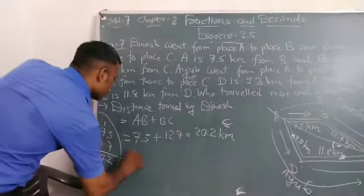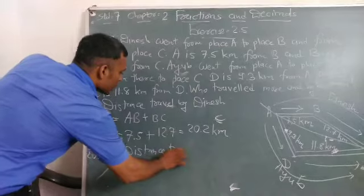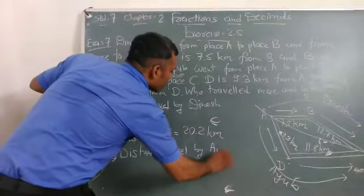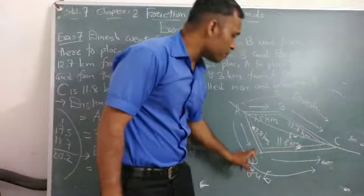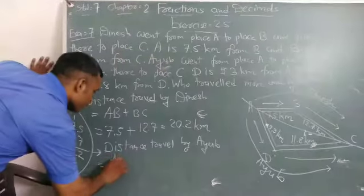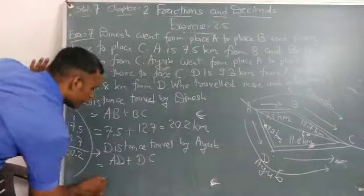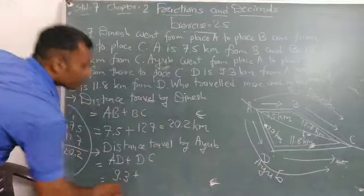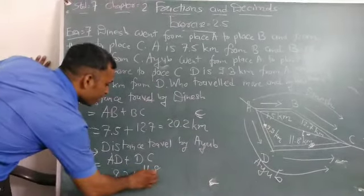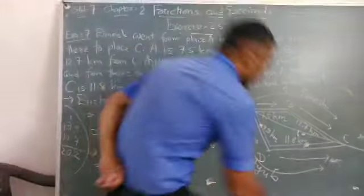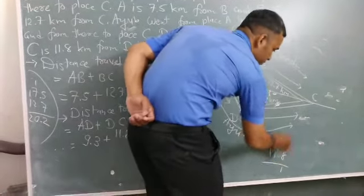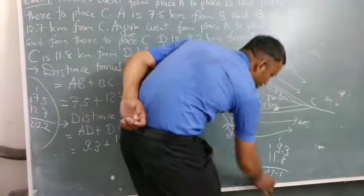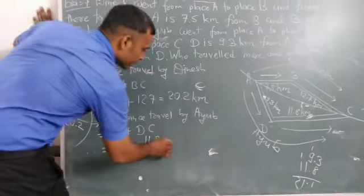Next question is, distance traveled by Ayub. Ayub traveled downward, AD plus DC. AD distance is 9.3 km and DC distance is 11.8 km. Now we find 9.3 and 11.8. 3 plus 8 is 11, carry 1. 9 plus 1 is 10, plus 1 is 11, carry 1. 21.1 km.